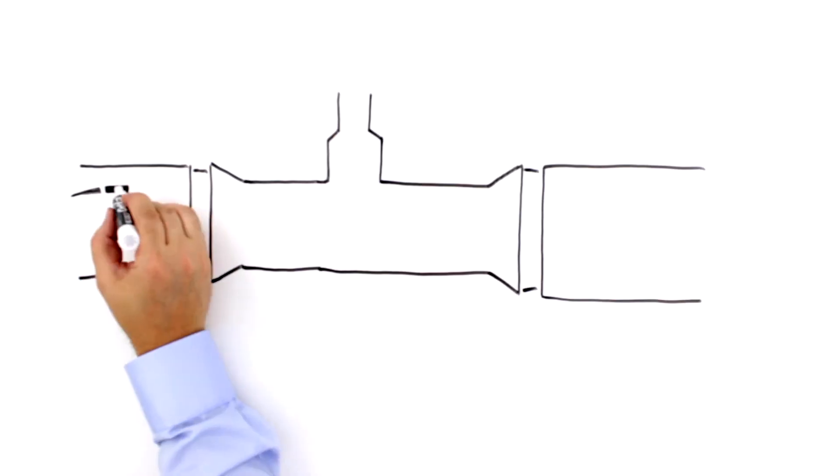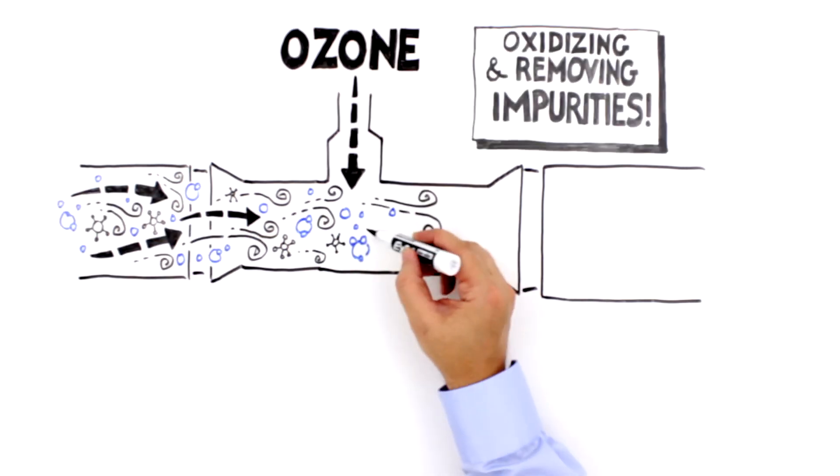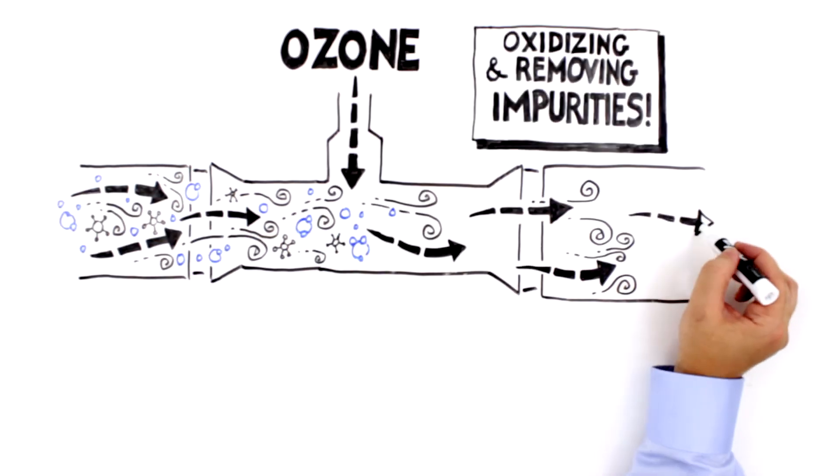After passing across the UVC bulb, water can be injected with ozone, oxidizing and removing impurities. Adding the step makes an already powerful process even better. Low output ozone essentially evaporates the particles that UVC light treats, making them disappear.